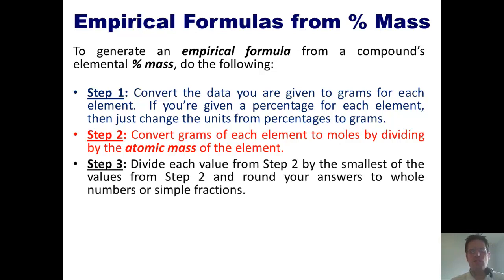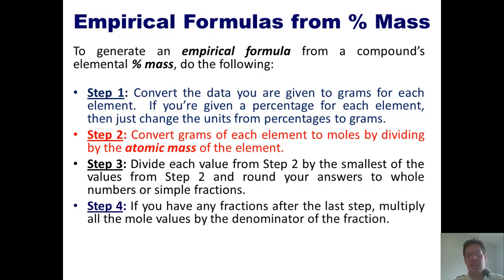Three, divide each value you got in step two by the smallest number you got in step two, and then round all the answers to the nearest whole number or simple decimal point or fraction. Four, if you have any fractions, multiply by whatever you need to, to every single number, to convert them to nice neat whole numbers.